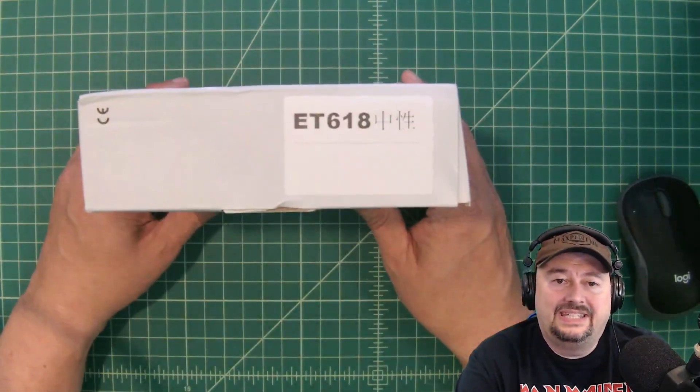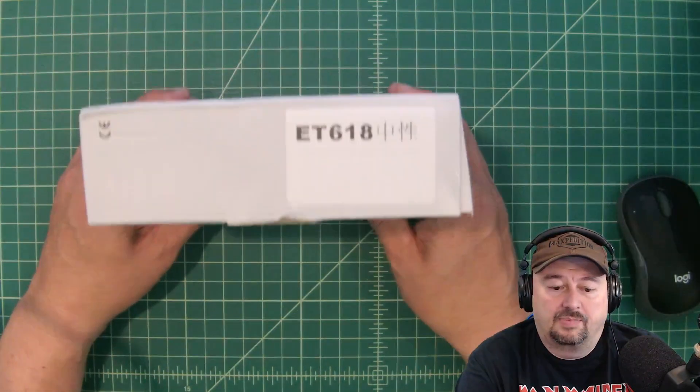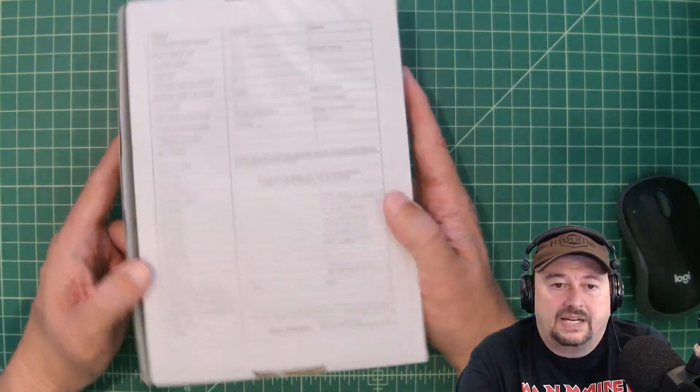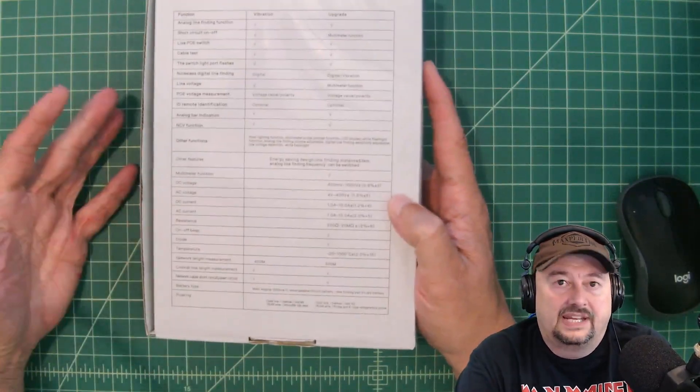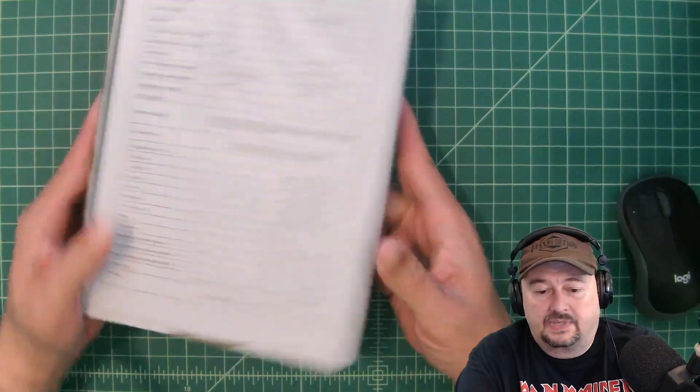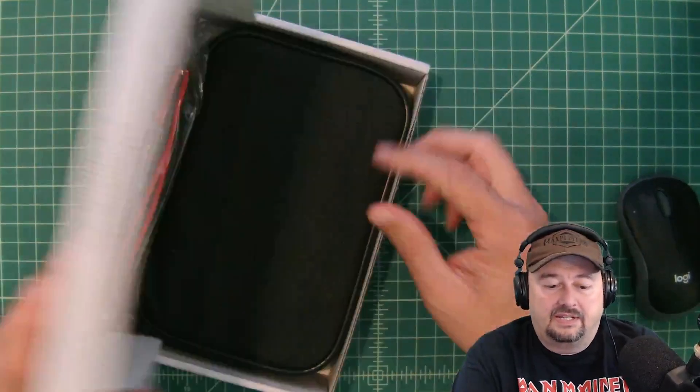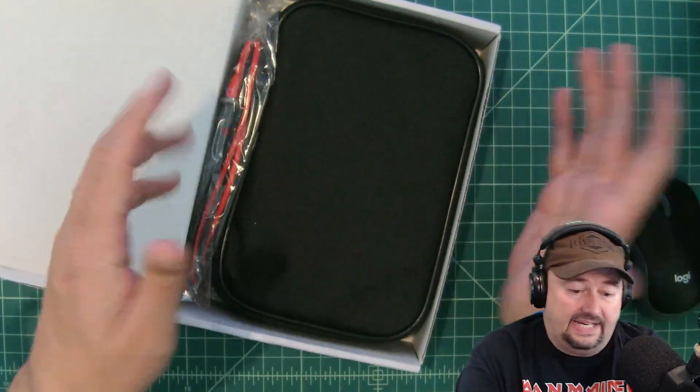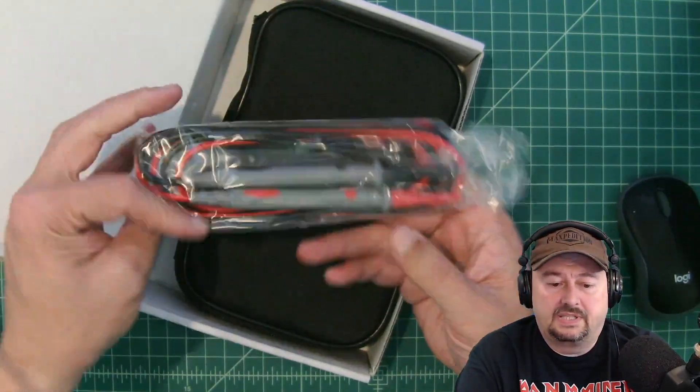It is the ET618 for those that are playing along. On the back of the box there are a ton of specifications that I can't read, so we'll pull up a website where we can see that stuff. Let's take a look and see what's inside. I have not opened this box, so we are enjoying this moment together.